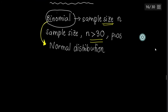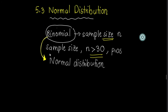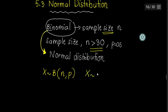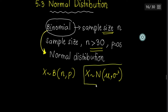Do you still remember how to write the binomial notation? Previously we wrote it with N and P, where N was your sample size and P was your probability of success. For normal distribution, we write X ~ N(mean, variance). Take note — this is the notation for normal distribution.